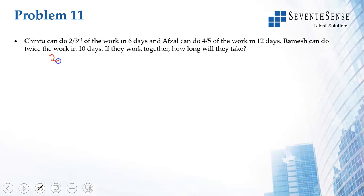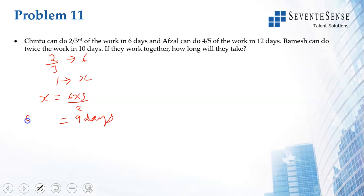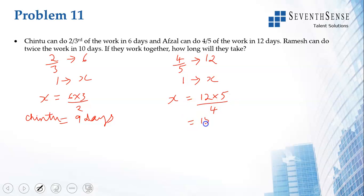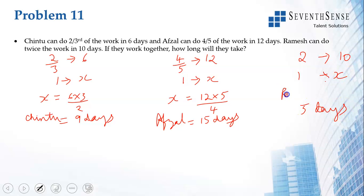Chintu can do 2 thirds of the work in 6 days. So x equals 6 divided by 2 by 3, which equals 9 days. Abzal does 4 fifths of the work in 12 days, so x equals 12 divided by 4 by 5, which is 15 days. Ramesh can do twice the work in 10 days, so one unit takes 10 by 2 equals 5 days. Their combined one day's work is 1 by 9 plus 1 by 15 plus 1 by 5.